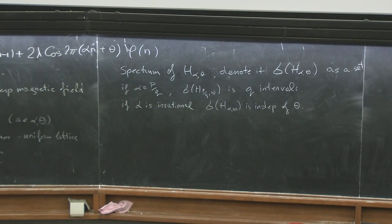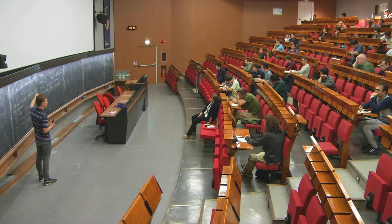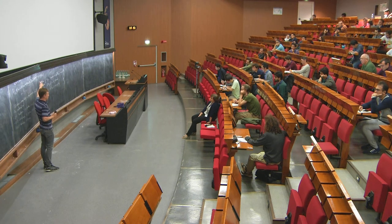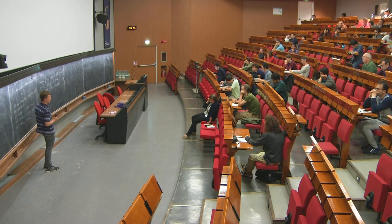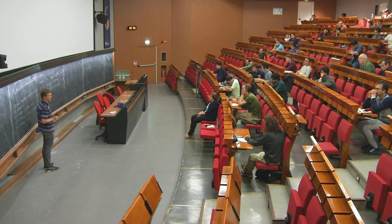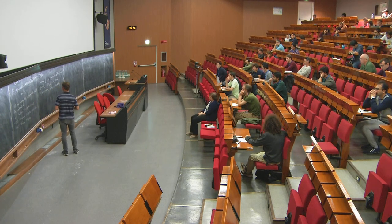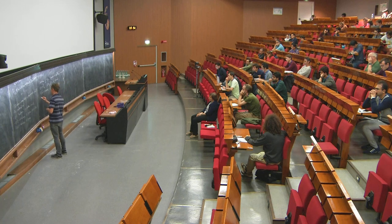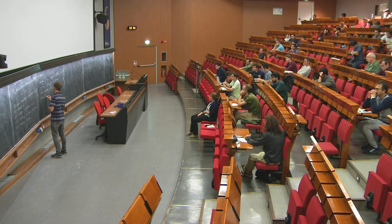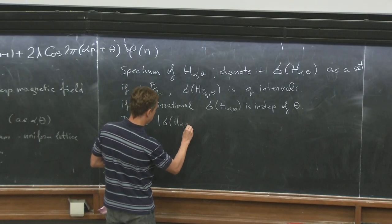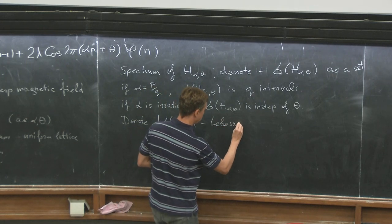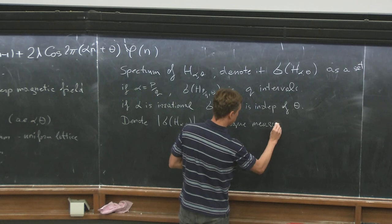Physically, what is significant is not just the individual spectrum but rather the union over all theta. The proper parameters are alpha and lambda; theta is a kind of auxiliary parameter. For alpha irrational, it doesn't matter since it does not depend on theta — that's just an ergodicity property. We also denote the Lebesgue measure of this set.